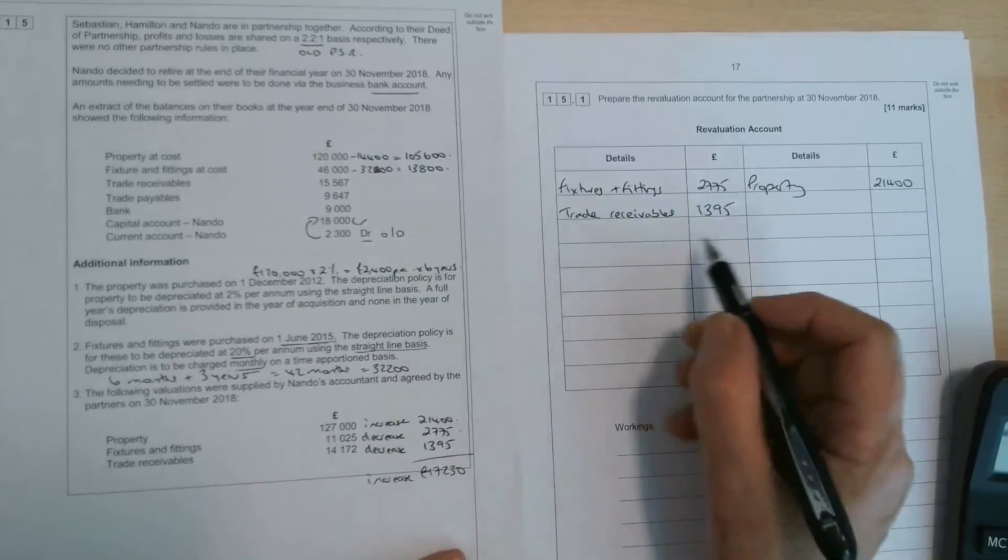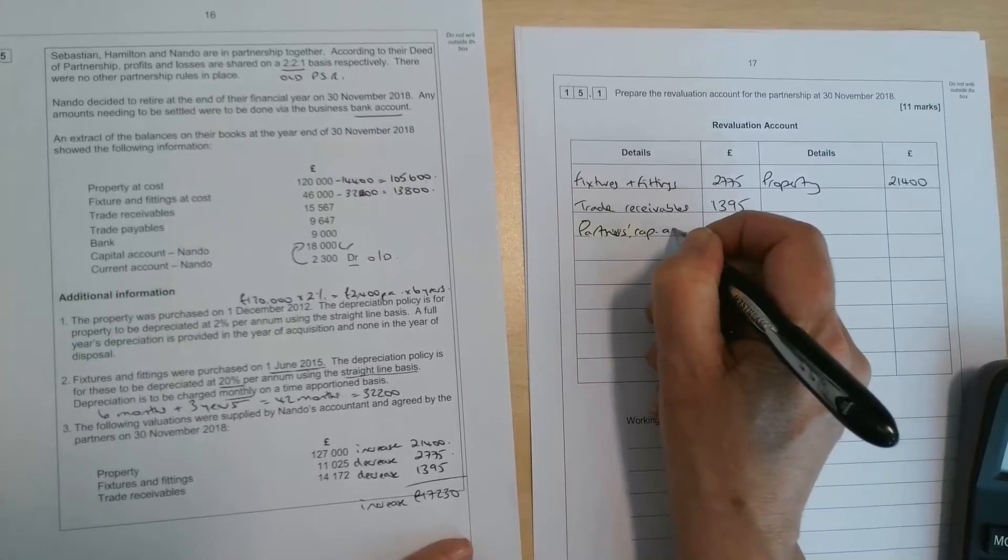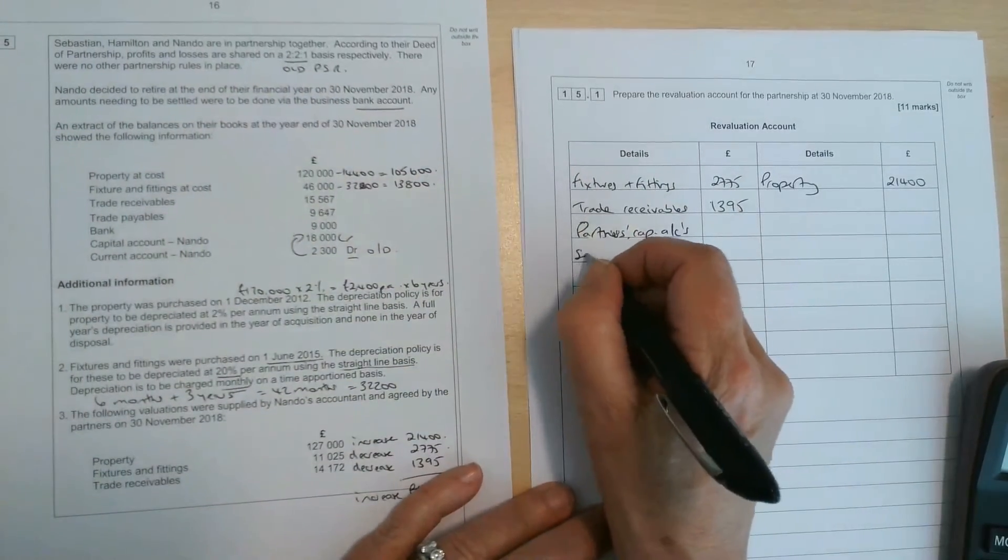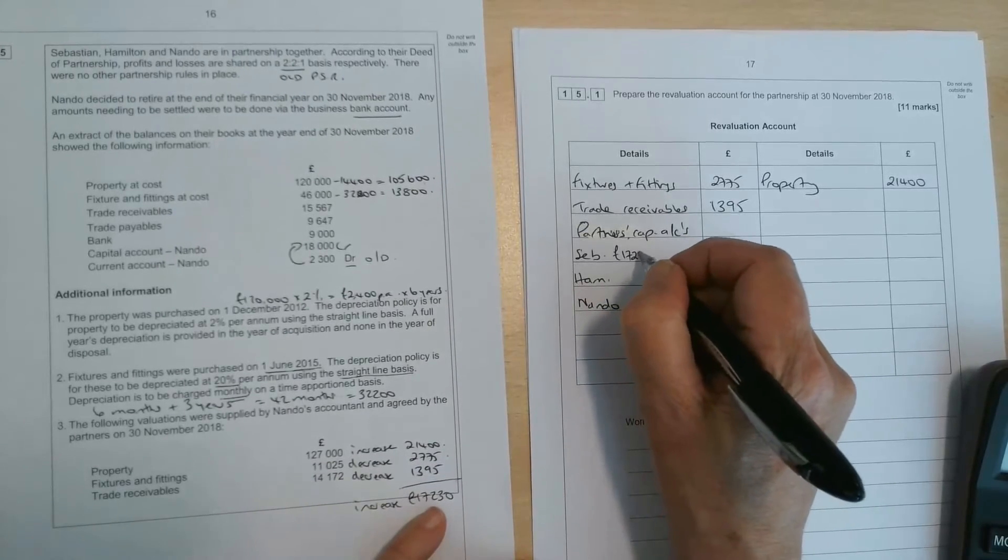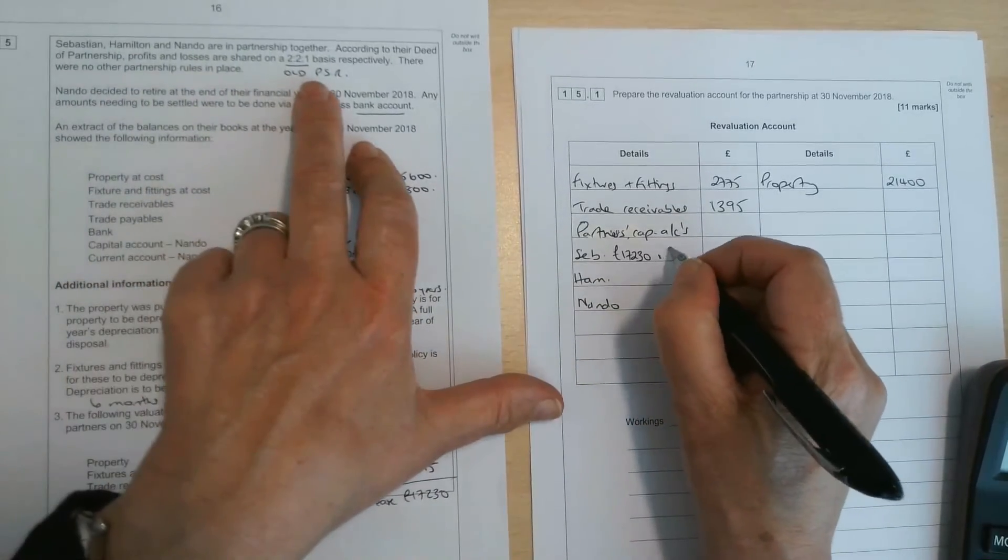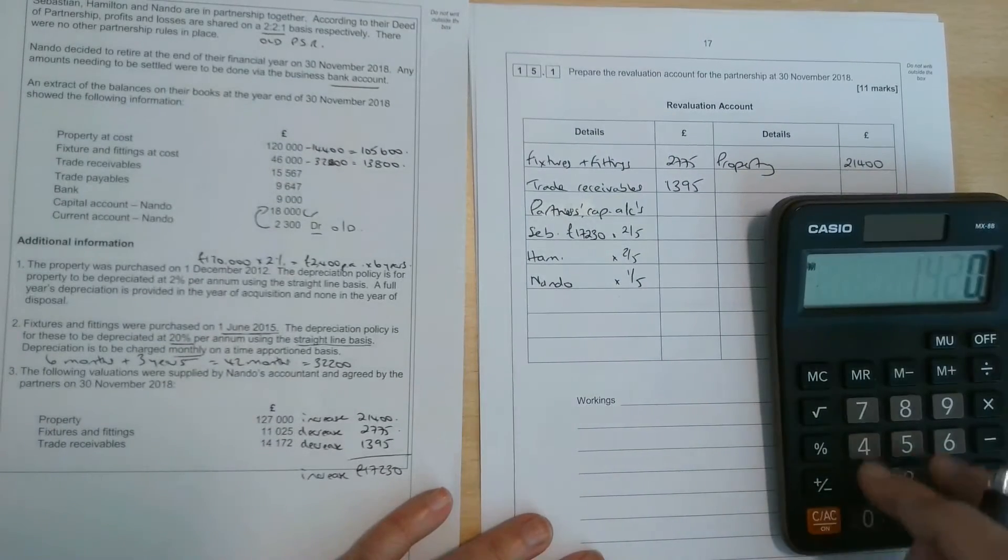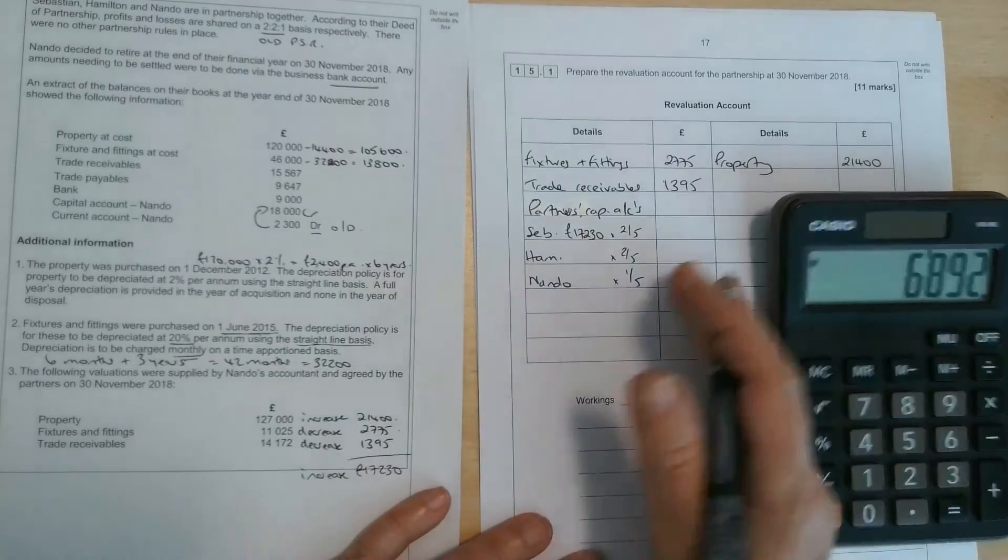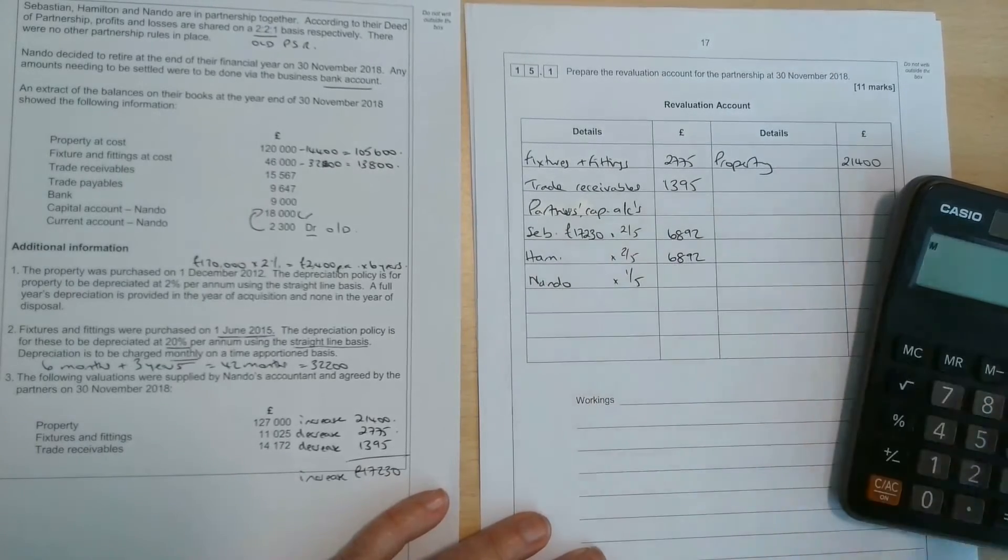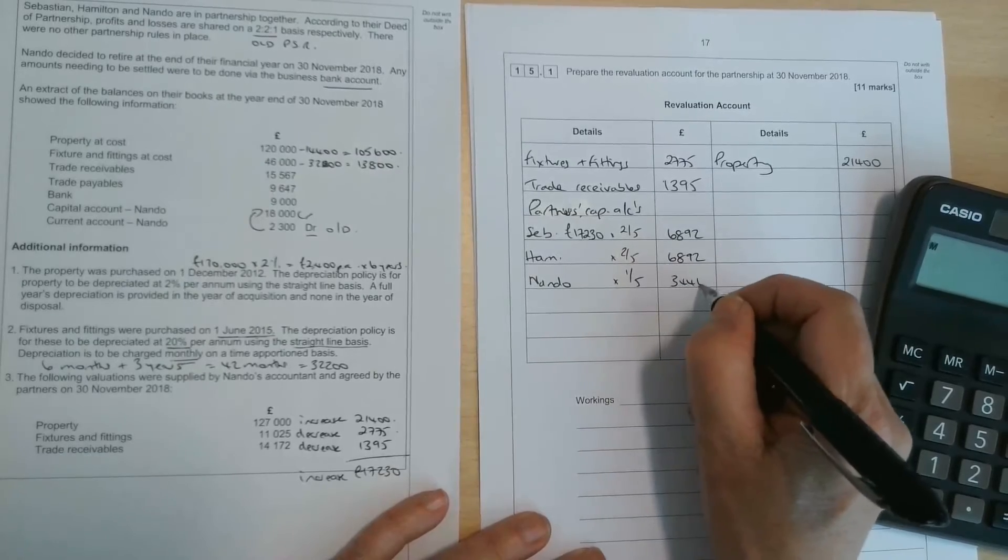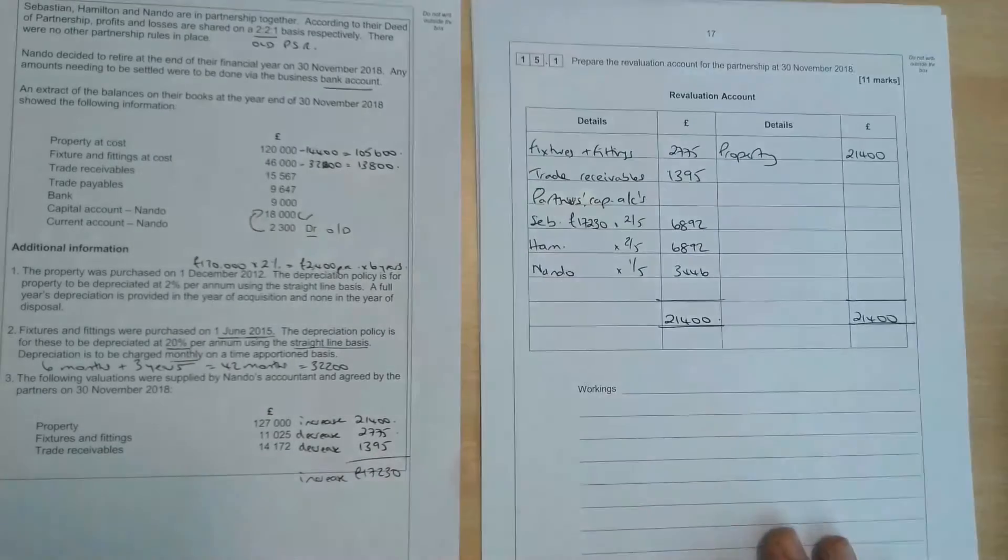So property minus these two. So overall, we've got a credit balance of 17,230, which needs to be taken over to the partners' capital accounts. So remember, we've got three of them. We've got Sebastian, we've got Hamilton, we've got Nando. Excuse the abbreviations here. So we are sharing about 17,230 on the basis of 2/5ths to Seb, 2/5ths to Ham, and 1/5th to Nando. So 17,230, we already have that in the calculator, times 2 over 5, and 6,892 will be credited into Sebastian's capital account. The same for Hamilton, and then half of that, 1/5th, 3,446, going into Nando. And just like with the suspense account, we just need to balance it off. Both sides need to agree, there is no balance carried down on there.